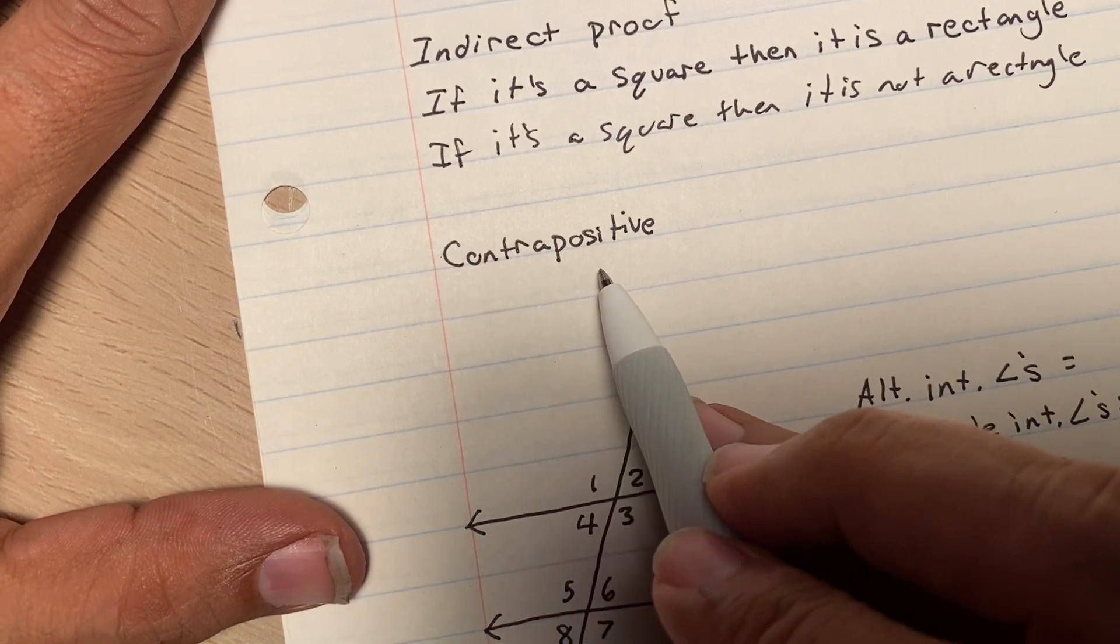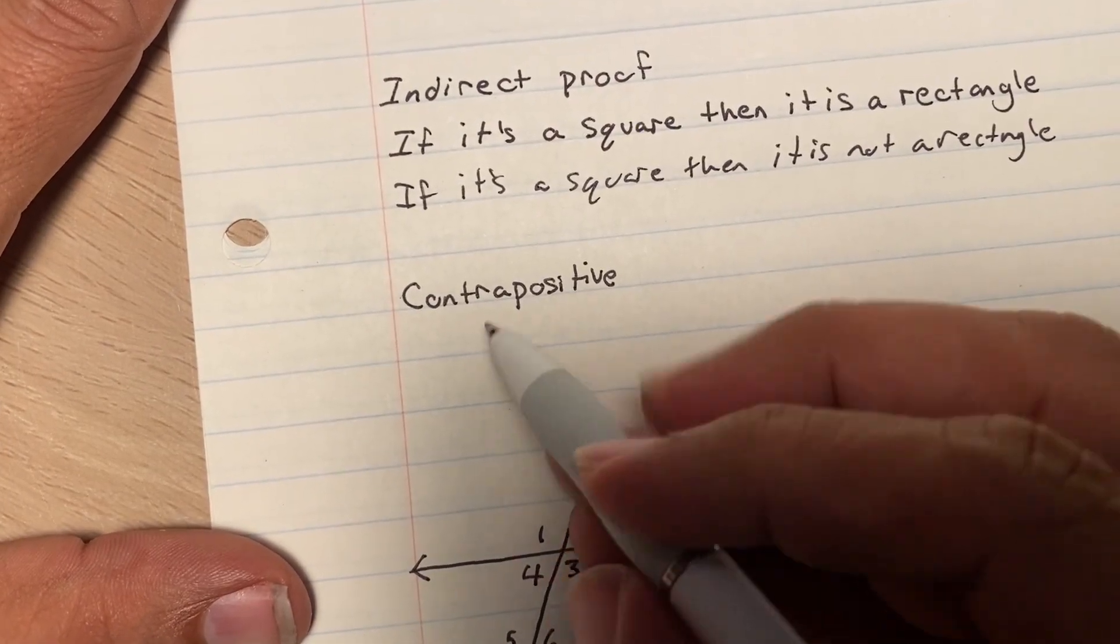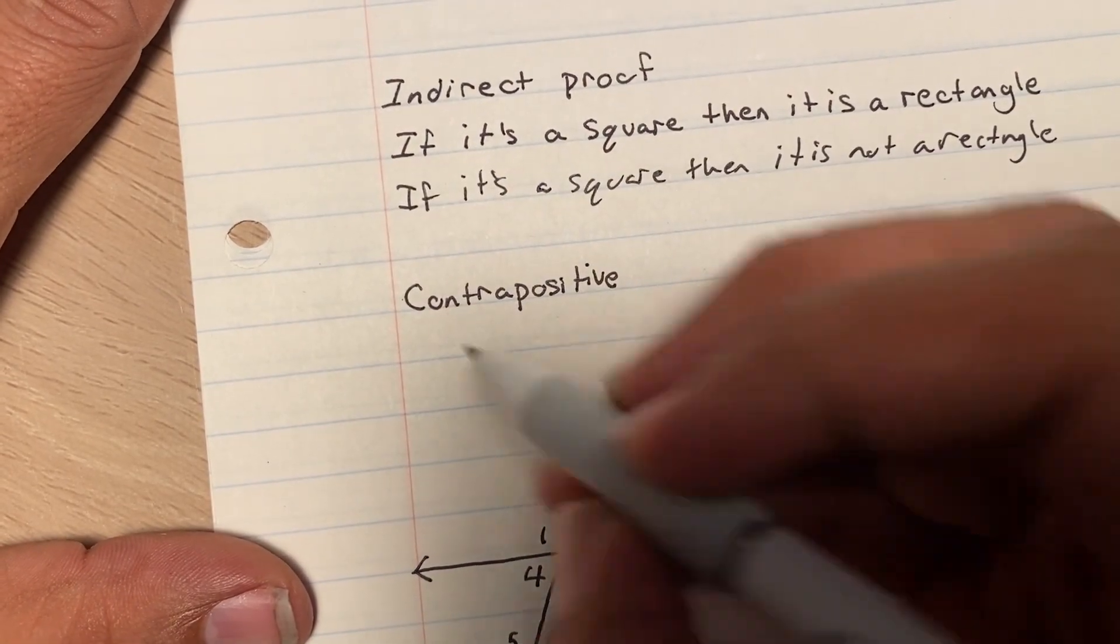So, the contrapositive is another way of proving something, but using the contrapositive statement. Now, the contrapositive of this statement is,